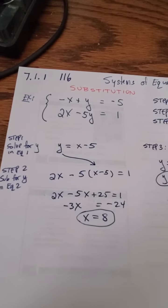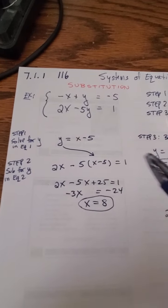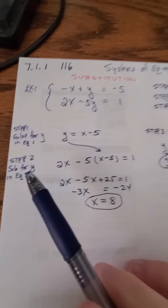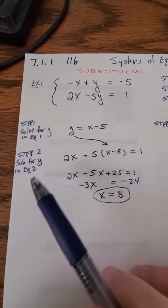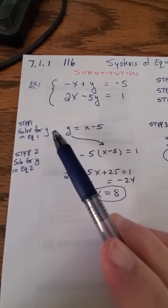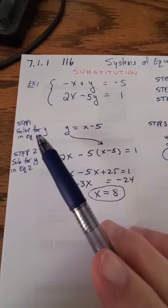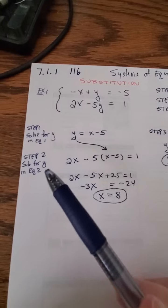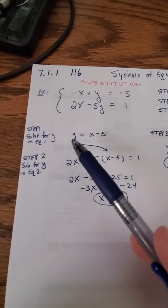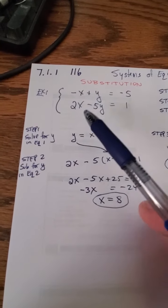Now step two: substitute y in the other equation. Again, I picked y in equation one. I could have picked x - whatever. Once I have the y, I substitute it. See, here it says two x minus five y, so where would have been a y, I substituted this over here: x minus five.